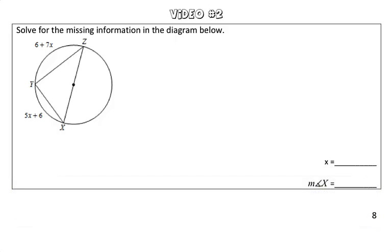In this problem, we are asked to solve for the missing information in the diagram below. What we are looking for is both the variable x, and we are also looking for the measurement of angle x.